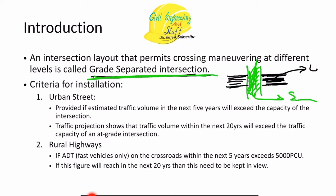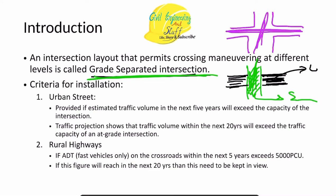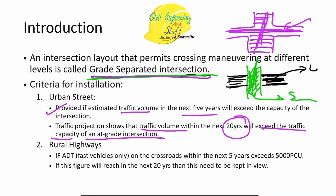When do we construct a grade separated intersection? In an urban street, we go for grade separated intersection when the traffic volume in the next 5 years is expected to exceed the capacity of the at-grade intersection. Similarly, if during a traffic study we observe that traffic volume will surpass intersection capacity within 20 years, we also go for a grade separated intersection.